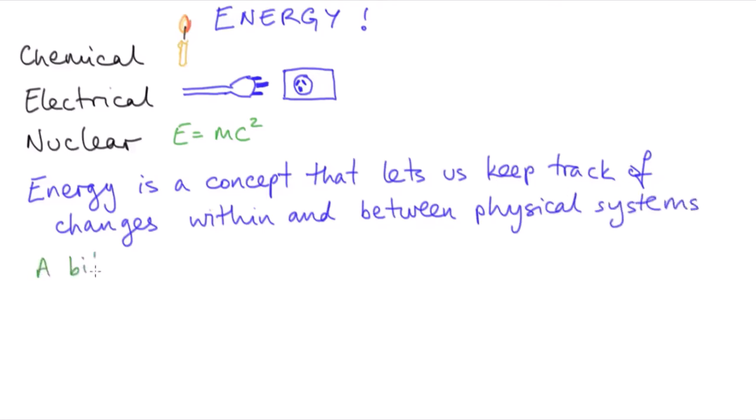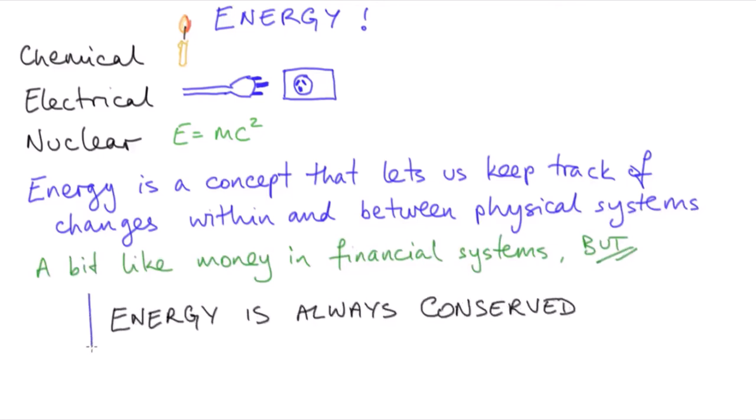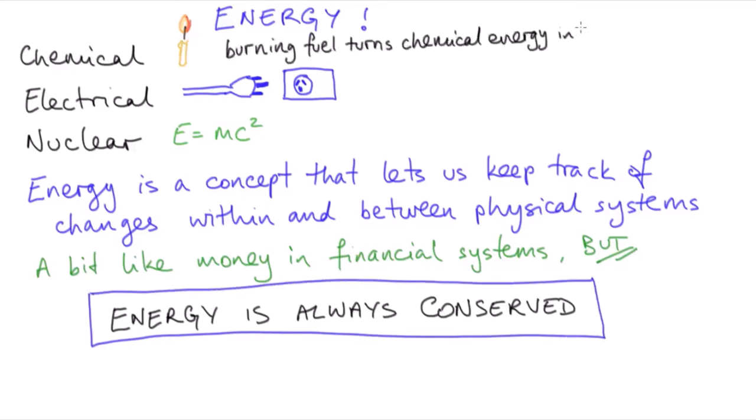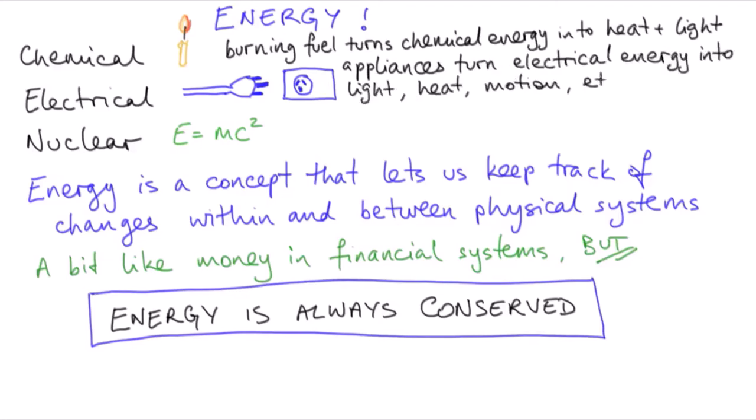A little bit like money lets us keep track of the exchange of goods and services in a social and economic system. But a really big difference between energy and money is that energy is conserved. The total amount of energy in the universe stays the same, and it can only be transferred from one attribute of a system to another attribute, or from one system to another.